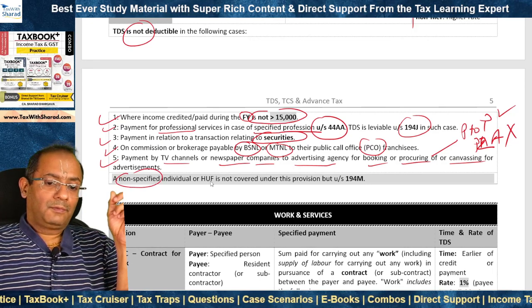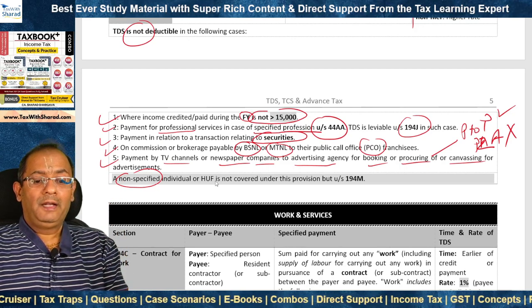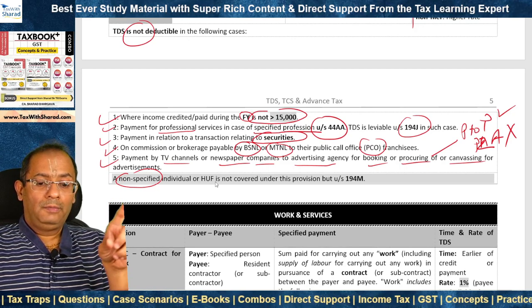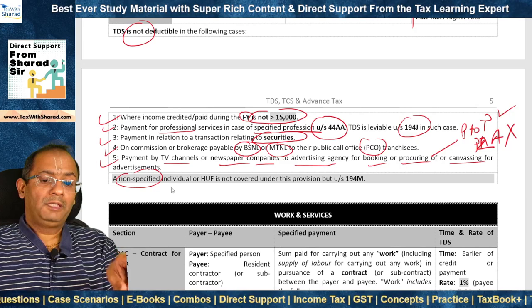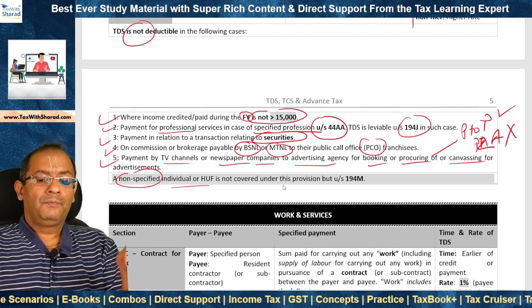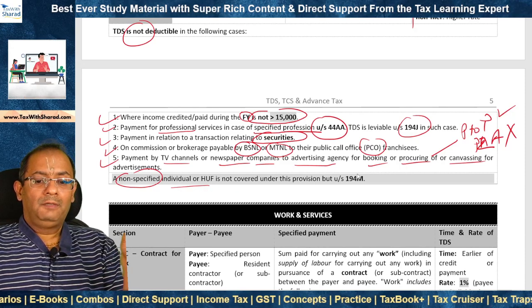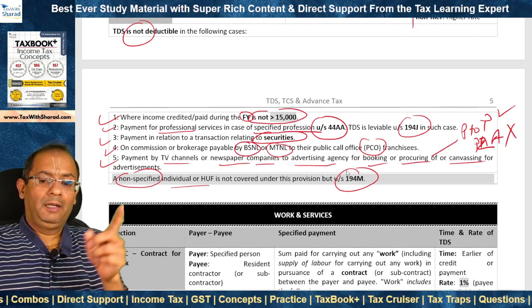Section 194H applies where the payer is a specified individual or HUF. A non-specified individual or HUF payer is covered not under 194H but under section 194M.